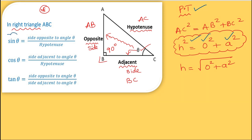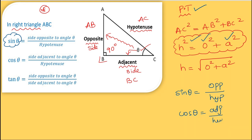Sin θ = opposite / hypotenuse. Cos θ = adjacent / hypotenuse. Tan θ = opposite / adjacent. These are the fundamental trigonometric ratios — very very important.